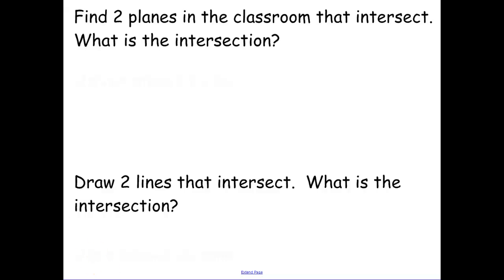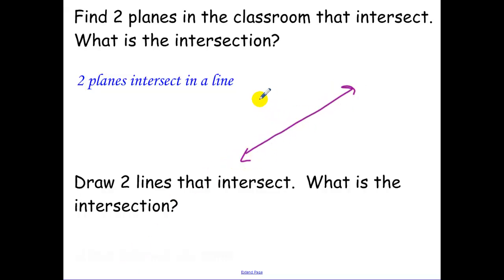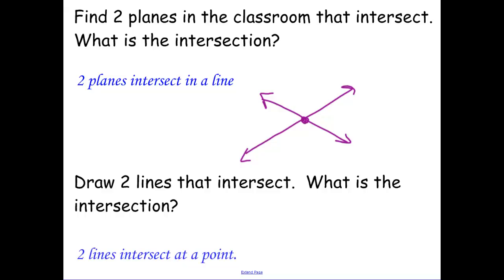Find two planes in whatever room you're in, like the intersection of two walls. What is the intersection of those two planes? When you picture two planes intersecting, what geometric figure is in both planes? Two planes intersect in a line. And if you draw two lines that intersect, what is their intersection? Two lines intersect at a point. These are theorems we'll be using, so those are good abbreviations to remember.